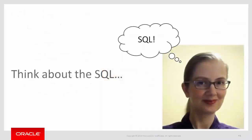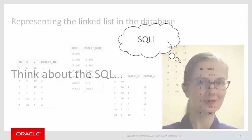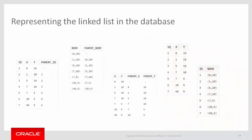Now we're ready to think about the SQL. The first thing to consider is how we're going to represent the linked list in the database. There are quite a number of different ways to do this, and you can move between any of these representations with a single SQL statement. I'm going to pick the one that's easy to work with: x and y of each node in separate columns, with nodes assigned a sequence number in the order of the linked list.